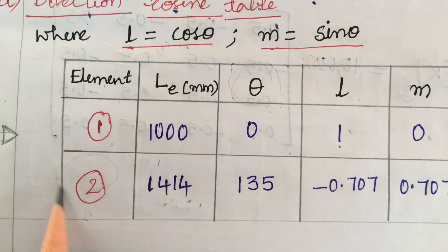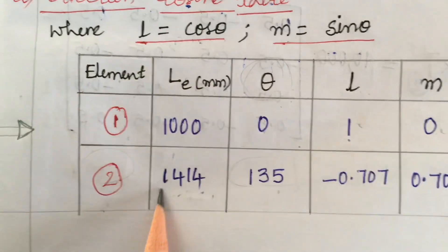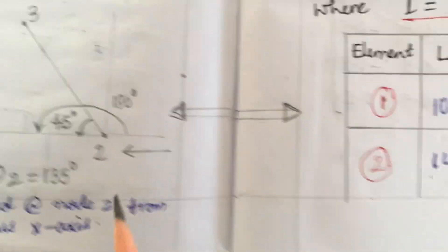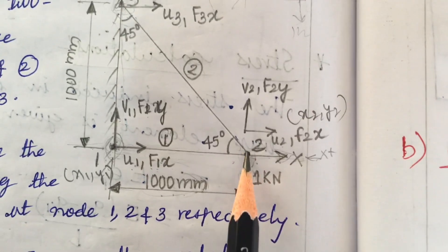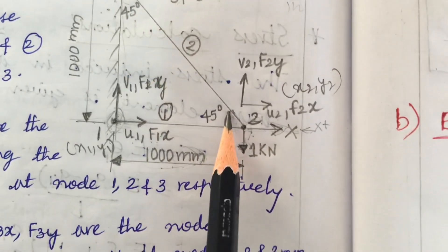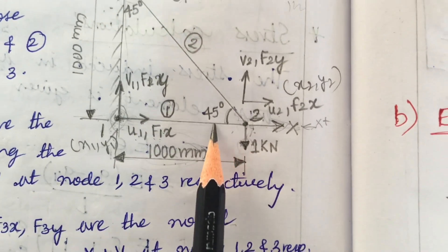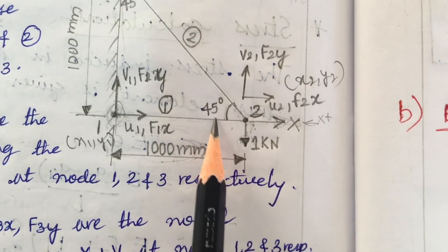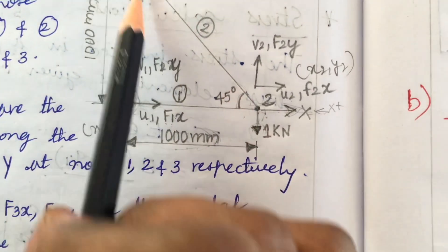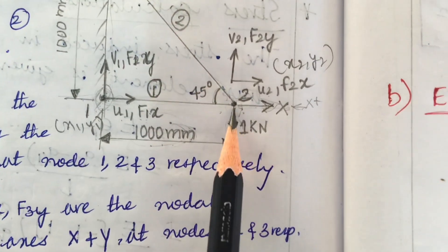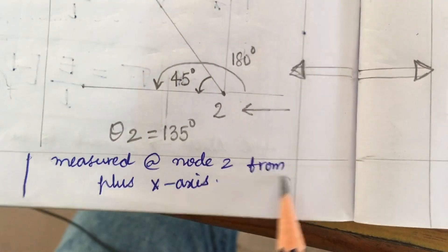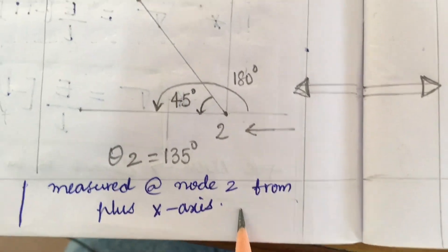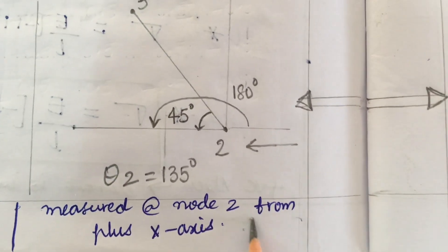Now, how do we work out the theta value for element 2? Let us take into consideration element 2. It is given in the problem that it is of 45 degree inclination, but this is not directly the theta value. Theta must be measured from the positive x-axis at node 2.